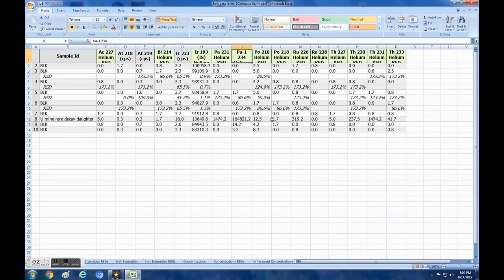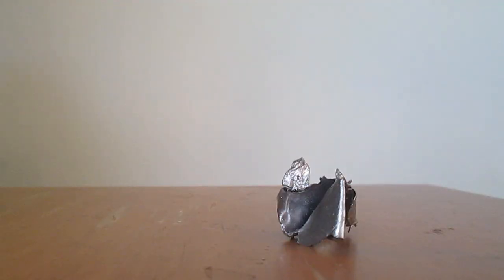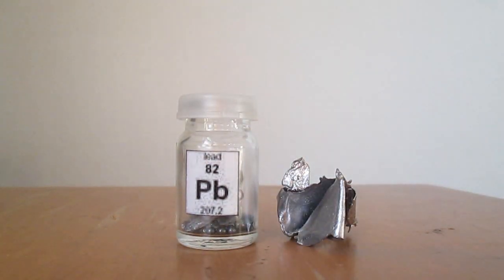Speaking of lead, there are four stable isotopes in nature, and the isotopic ratio in uranium ore is quite different. Lead-204 is really the only isotope of lead created by the supernova.